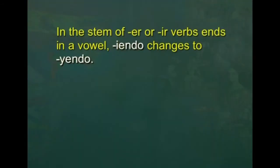Now let's practice to talk about some other actions in motion. We will now use irregular verbs. In the stem of -ER or -IR verbs, if the stem ends in a vowel, -iendo changes to -yendo. In other words, if the last letter of a verb before it ends with -er or -ir is a vowel — like leer, caer, etc. — it is an irregular verb and it is conjugated as -yendo instead of -iendo.